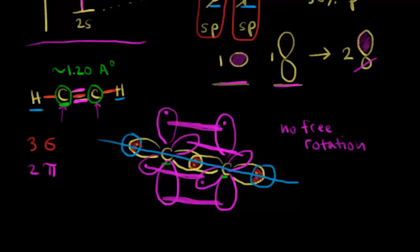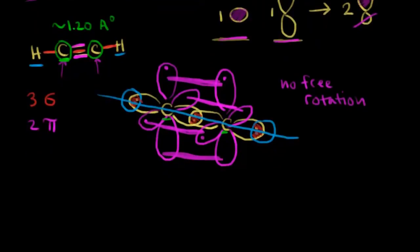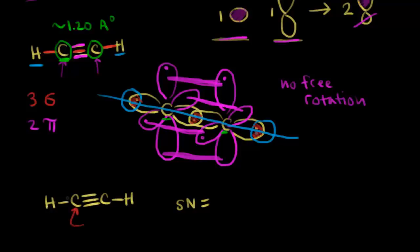Let's draw the dot structure one more time and analyze it using steric numbers. For acetylene with its triple bond, to find the steric number for one carbon: the number of sigma bonds plus lone pairs. In a triple bond there is one sigma bond and two pi bonds, so together with the sigma bond to hydrogen, that's two sigma bonds and zero lone pairs — steric number equals two. Two hybrid orbitals come from one s orbital and one p orbital, so a steric number of two means sp hybridization. Both carbons are sp hybridized, giving a linear geometry with bond angles of 180 degrees.